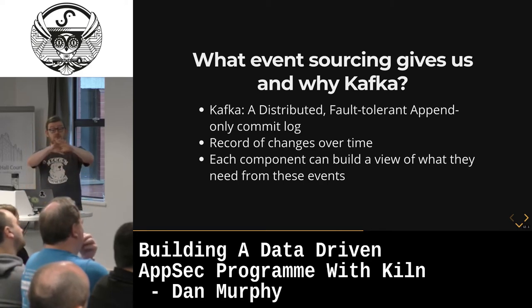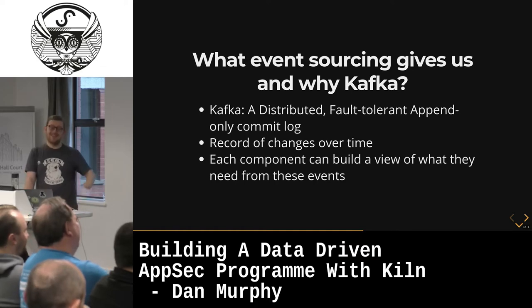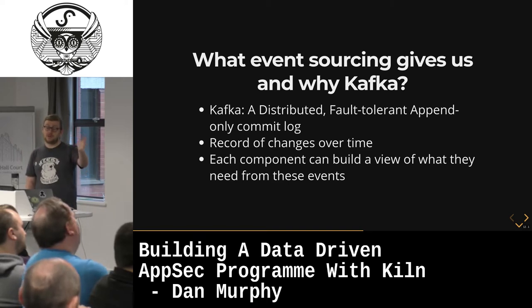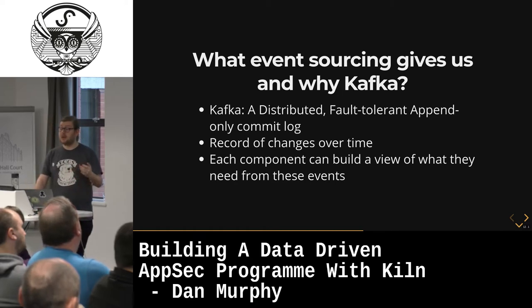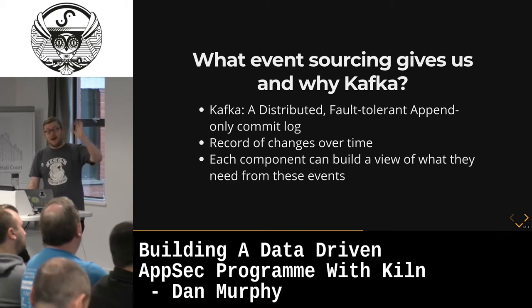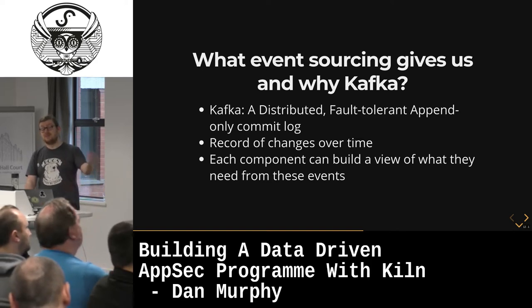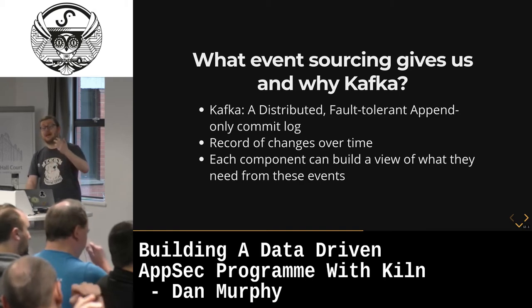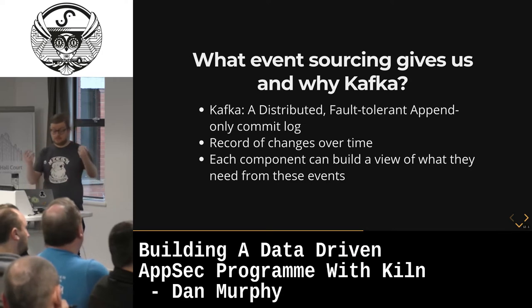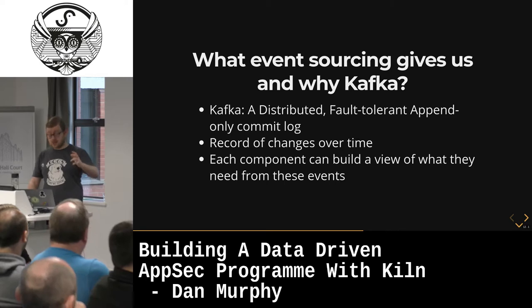Kafka, which is what we're using for all our data storage, is a distributed fault-tolerant append-only commit log. You can spin up a cluster of servers that will automatically shard data across those servers. If you've got an outage in a data center — say you're running in US-East-1 and all your EC2 nodes suddenly lose network connectivity, just picking a hypothetical situation that's never happened — Kafka will carry on serving transactions, accepting data and allowing consumers to read data. Once those nodes come back online, data will be rebalanced and everything goes back to normal. It lets you build a record of changes over time, which works nicely with that event sourcing architecture.